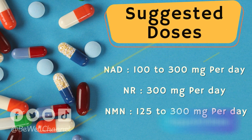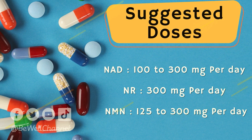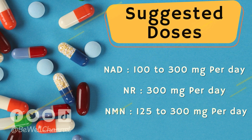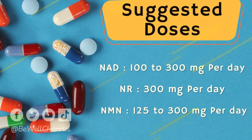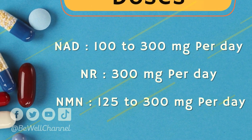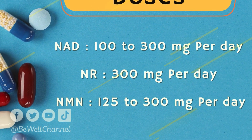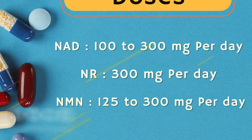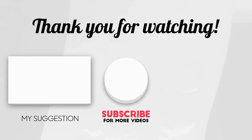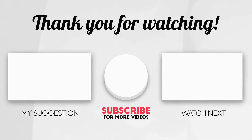Suggested doses: if taking NAD directly, the suggested dose is usually between 100 to 300 milligrams per day. If taking a NAD precursor, the suggested doses are as follows: nicotinamide riboside (NR) — 300 mg per day; NMN — between 125 to 300 mg per day. Thanks for your time. If you liked the video, share it and subscribe to the Be Well channel.